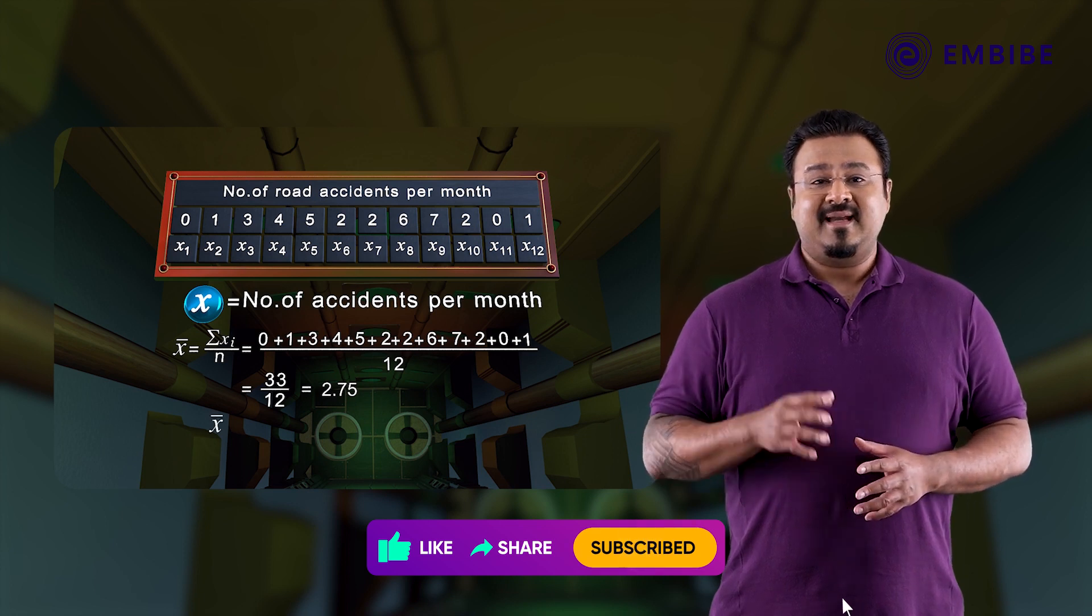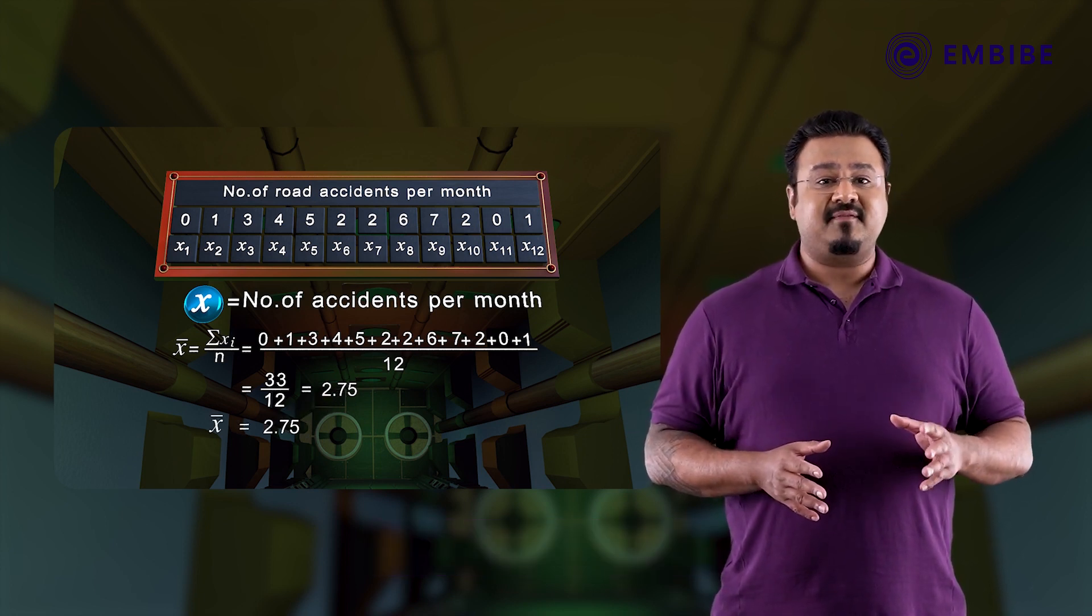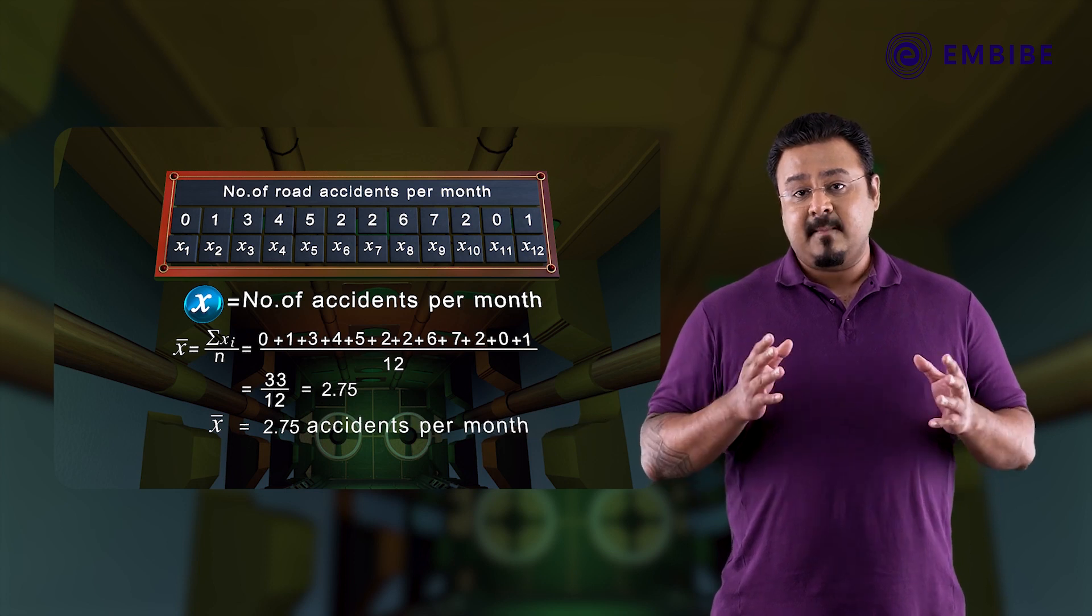Therefore, x̄ = 2.75 accidents per month.